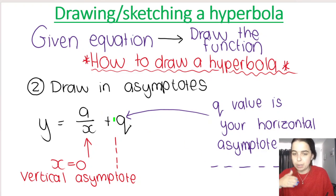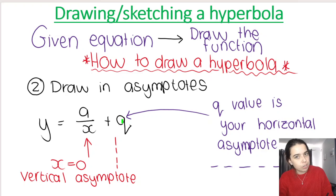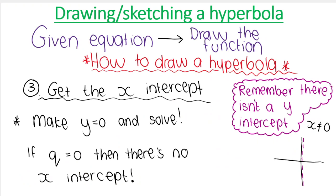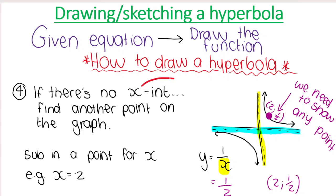If there's no q, then it's plus zero, so the horizontal asymptote is along the x-axis. But if it says minus three, for example, then the horizontal asymptote is where y equals negative three — read carefully. Then we get our x-intercepts by making y equal to zero and solving. Remember, if q equals zero — for example, y equals two over x — there is no x-intercept. There is also no y-intercept, because x cannot be zero.